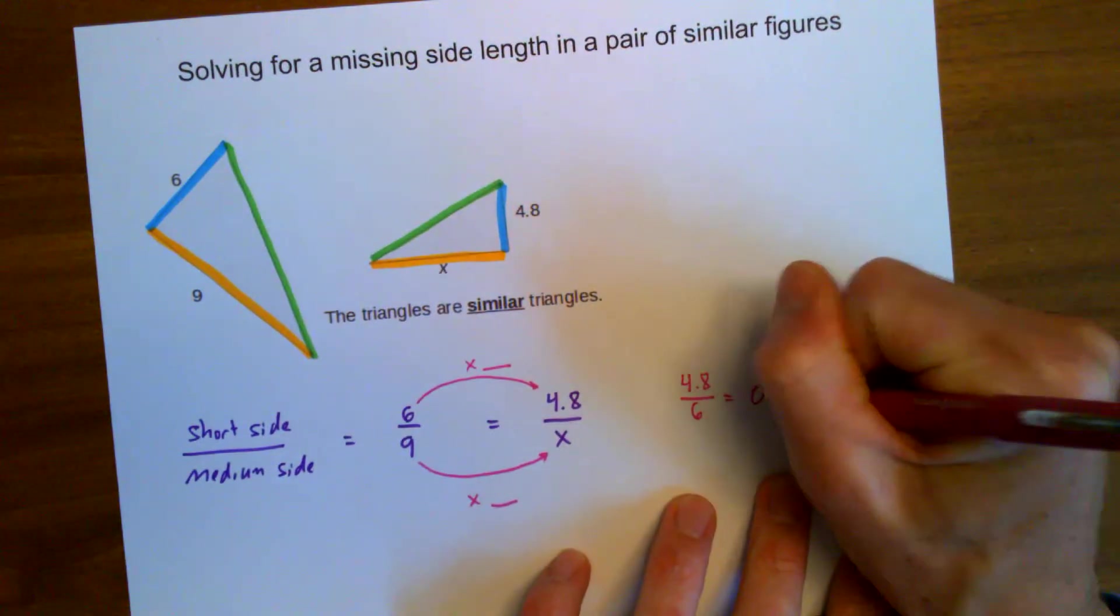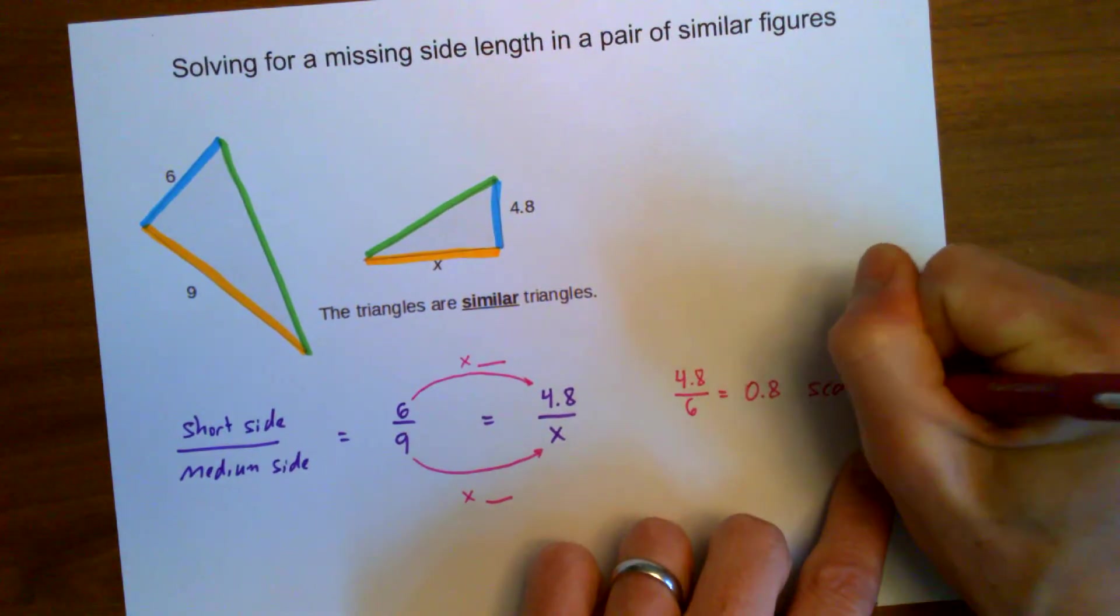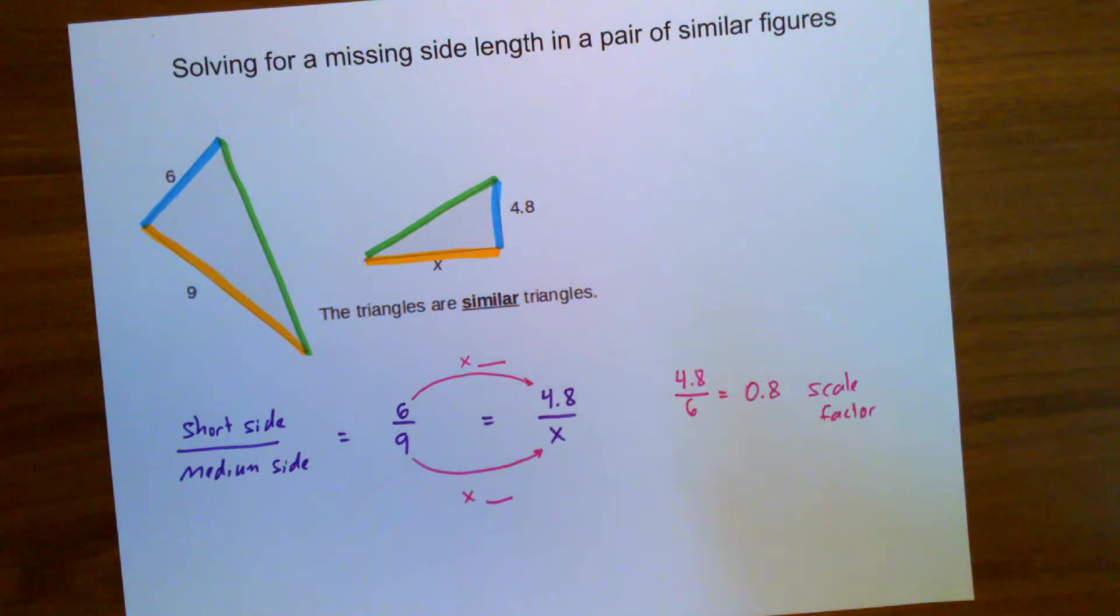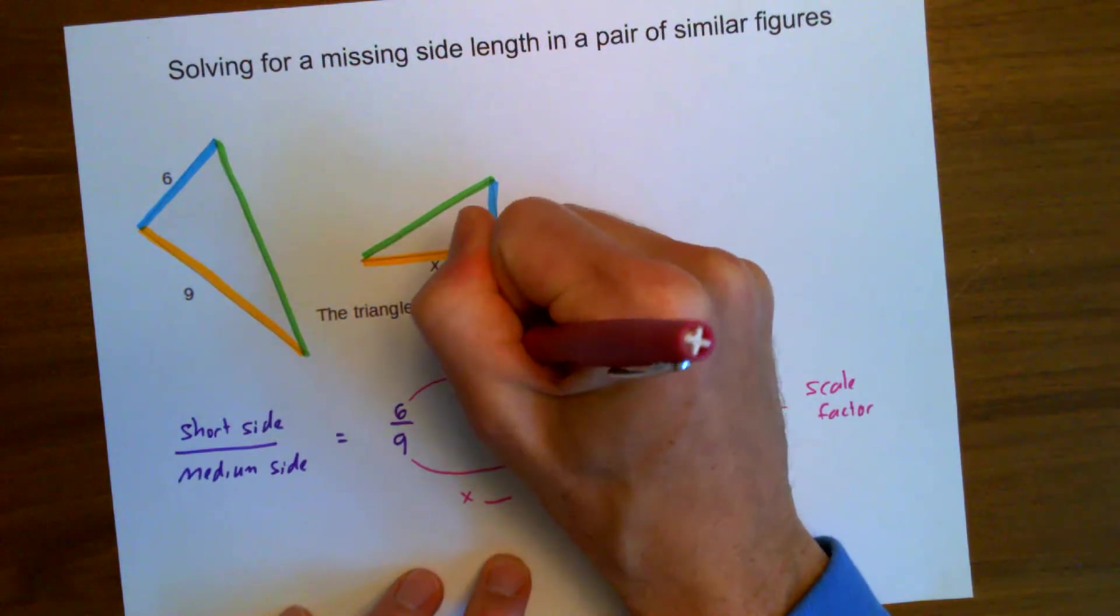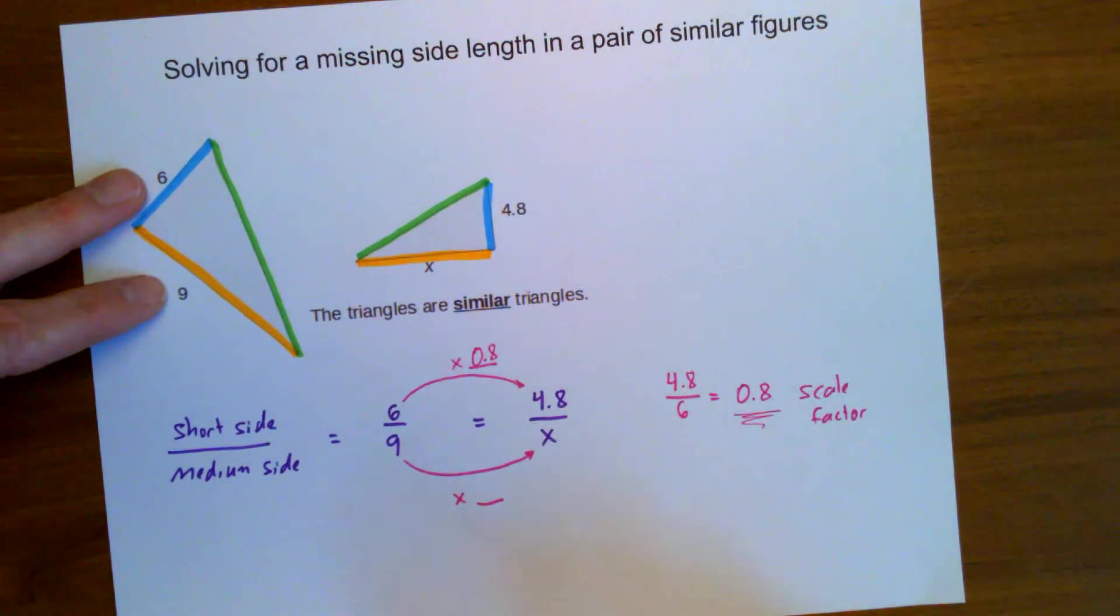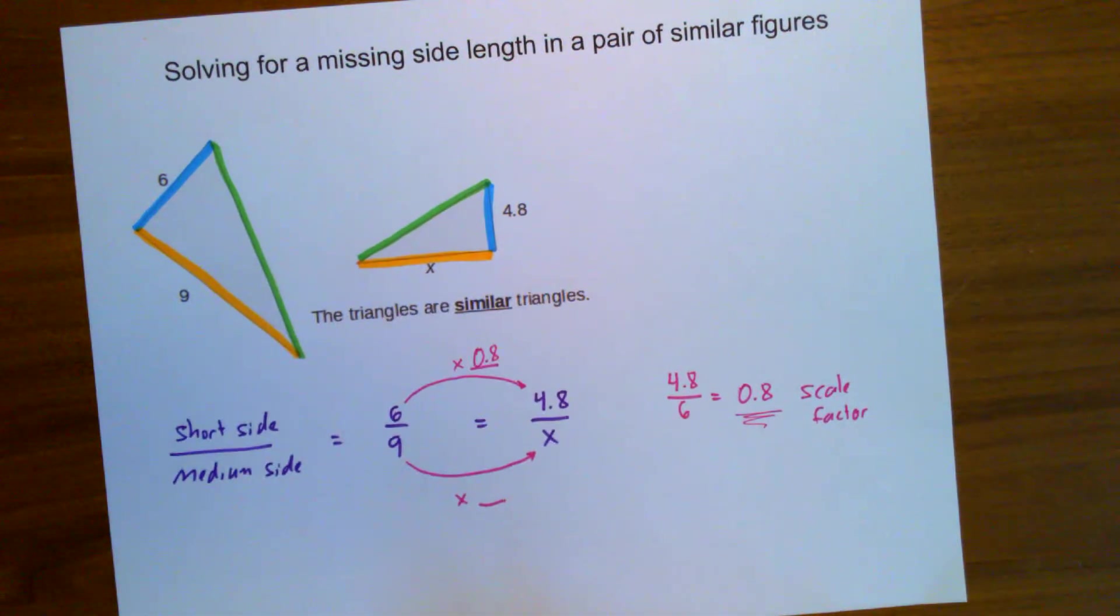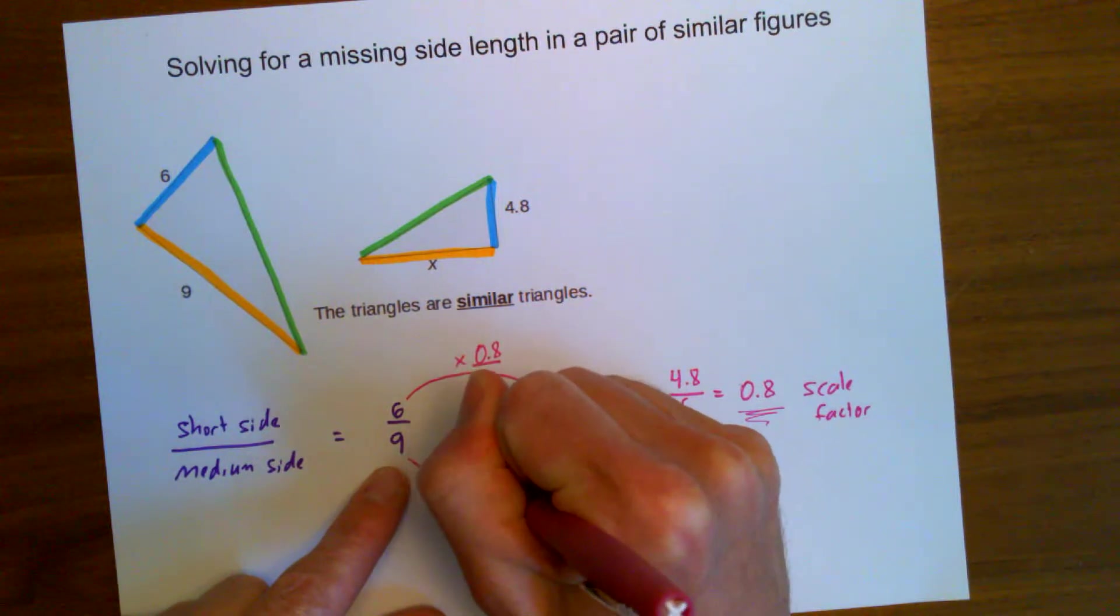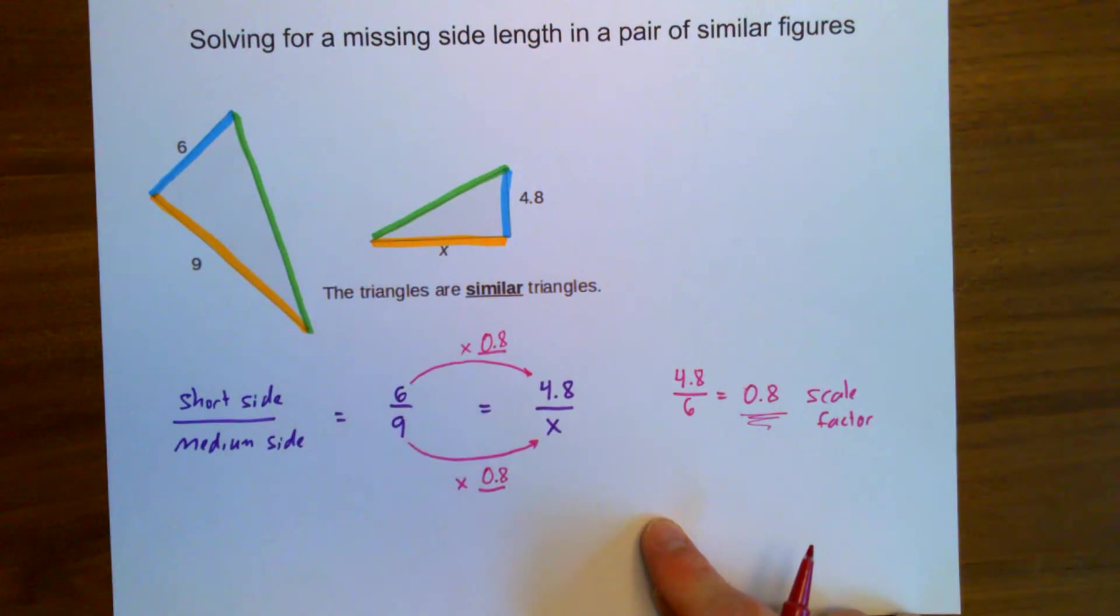So I know now that my scale factor must be 0.8. We're multiplying these side lengths by 0.8 to get the smaller new side lengths. So let's multiply this one by 0.8 too.